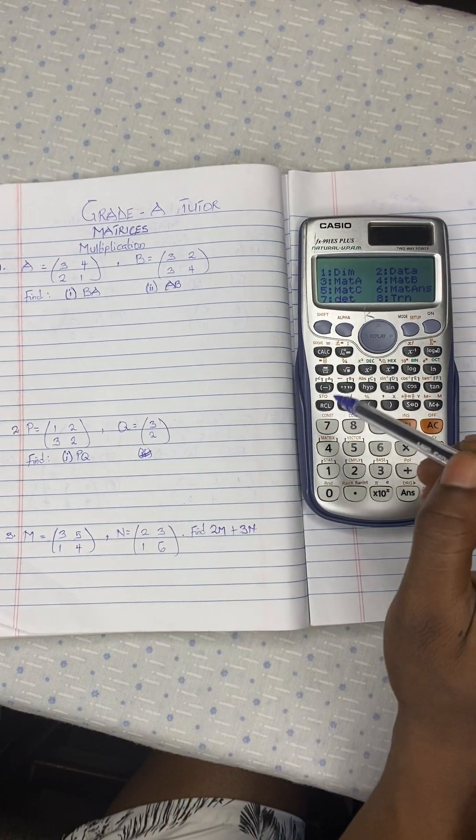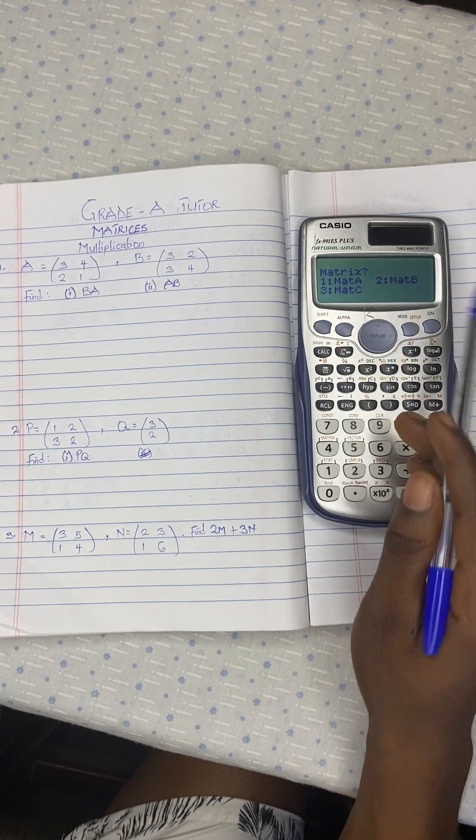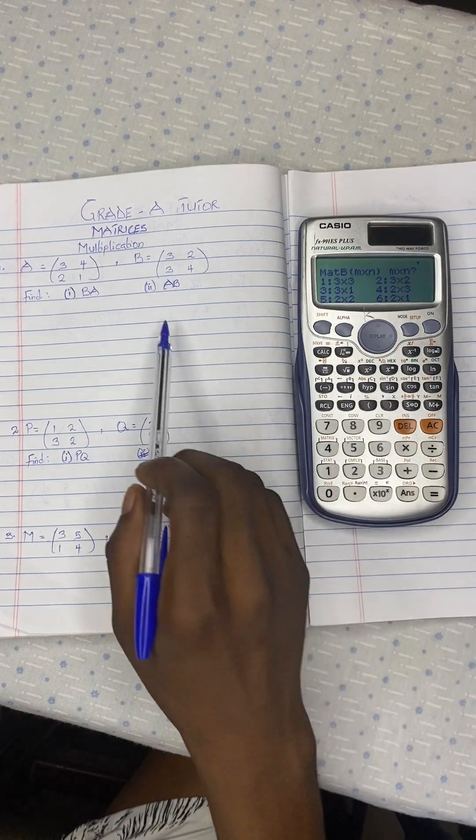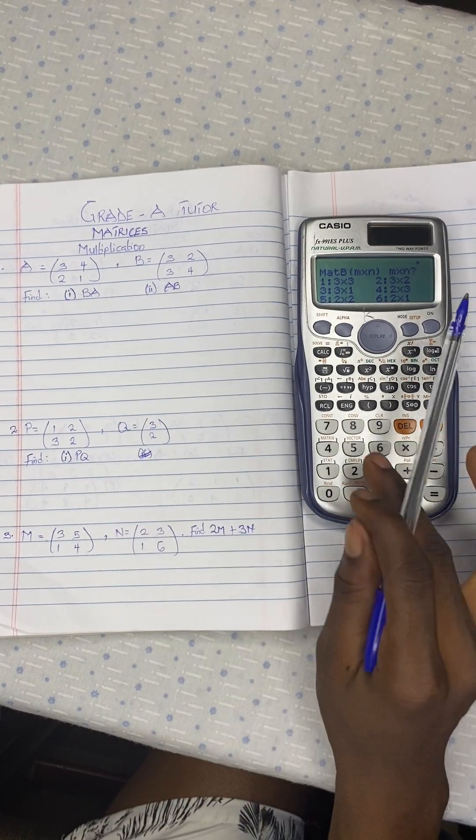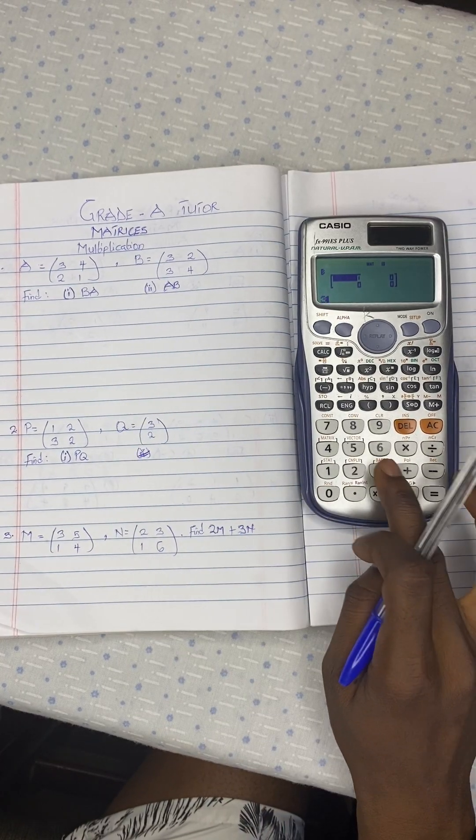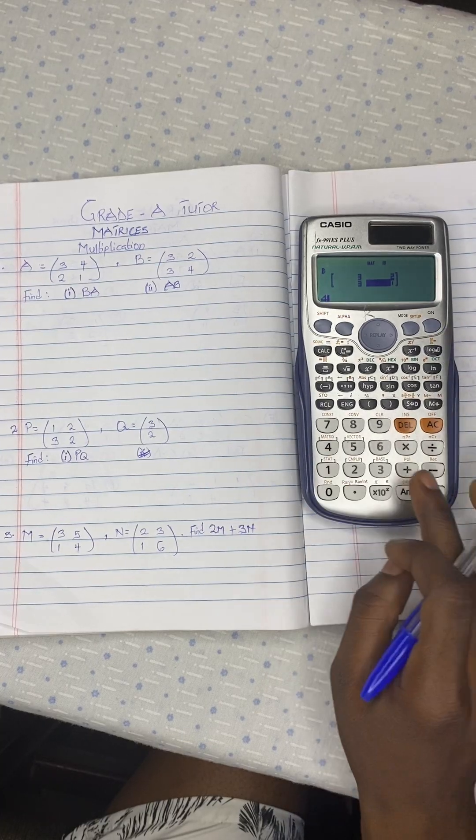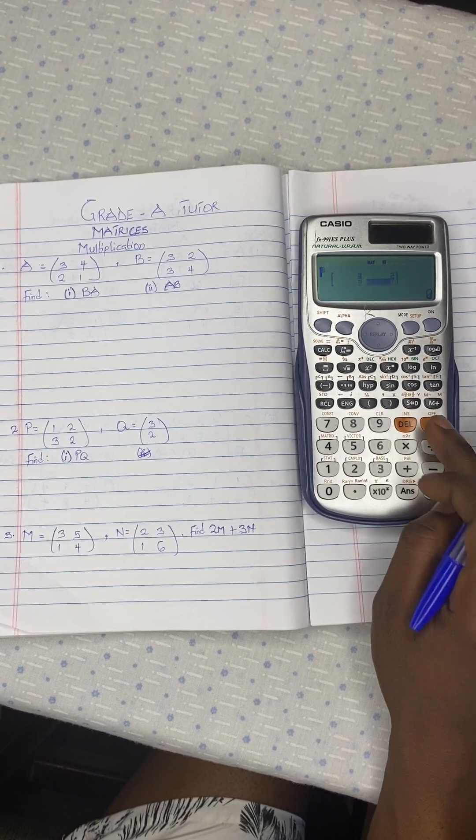Now that you want to input the second one, you come to Data. Then you choose B. So what is the dimension? That is 2x2, so 5. So 3, 2, 3, 4. So you press to save it.